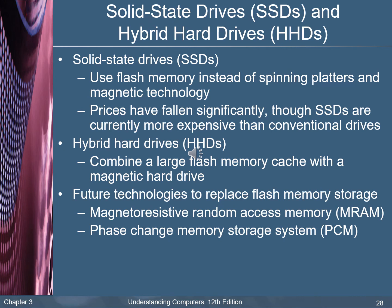Solid-state drives (SSDs) and hybrid drives (HHD): SSDs use flash memory instead of spinning platters and magnetic technology. Prices have been falling significantly, though SSDs are currently more expensive than conventional drives. Hybrid hard drives (HHD) combine a large flash memory cache with a magnetic hard drive. Future storage technologies to replace flash memory include Magneto-Resistive Random Access Memory (MRAM) and Phase Change Memory storage systems (PCM) — these are the future trends in storage capacity.